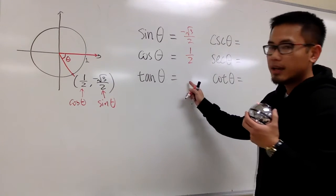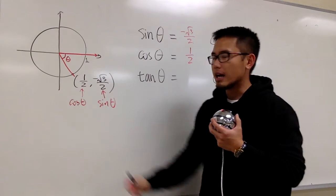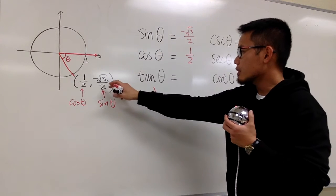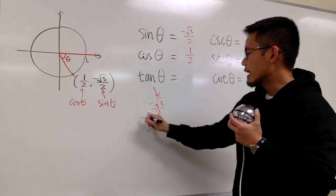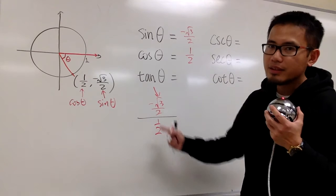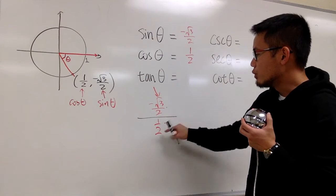Next, for tangent, I just have to do sine over cosine. This is going to be the sine value, -√3/2, over the cosine value, which is 1/2.